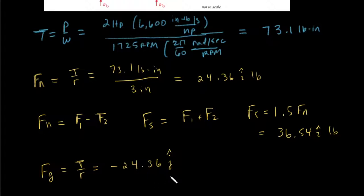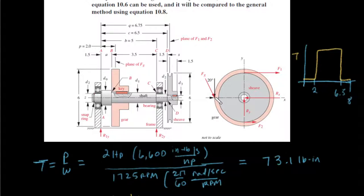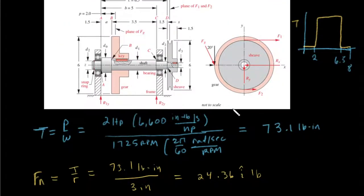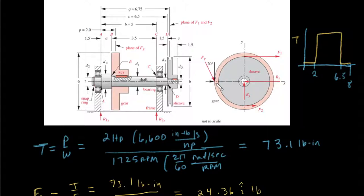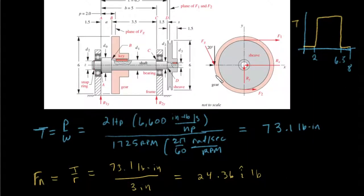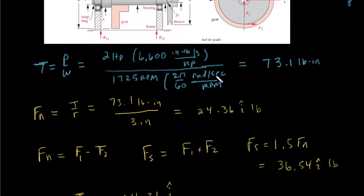The reason the gear tangential force is in the j direction has to do with where that load is picked up. We also need the radial component of the gear force, which arises from the 20-degree pressure angle. The radial component equals the tangential force times the tangent of 20 degrees, giving 8.87 pounds in the i direction — the same direction as fn and fs.